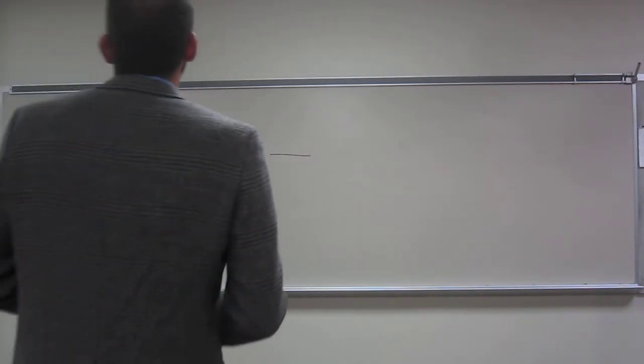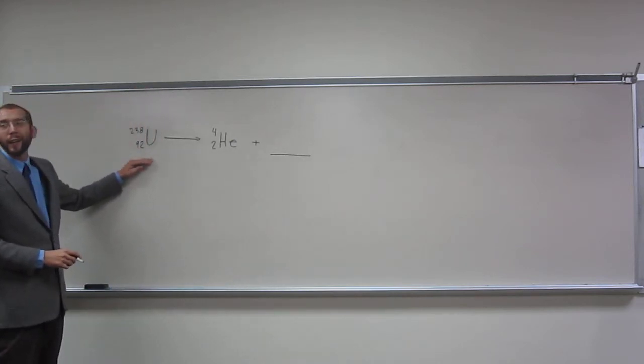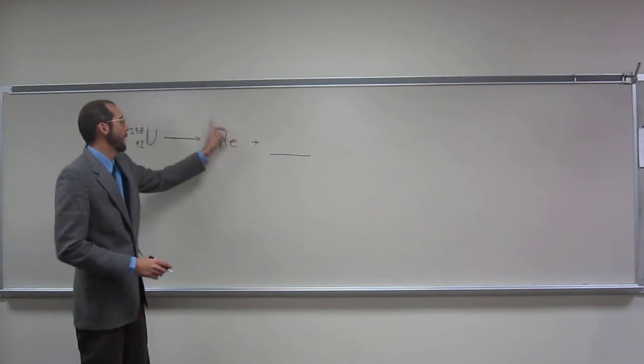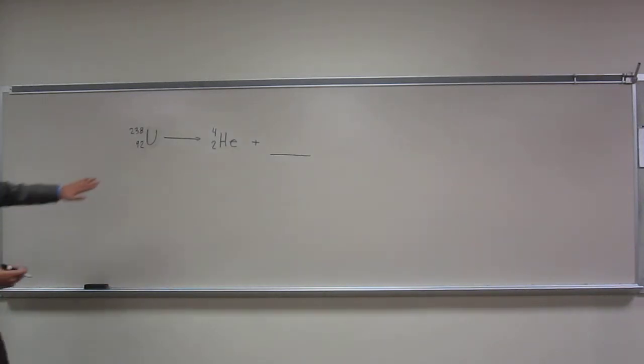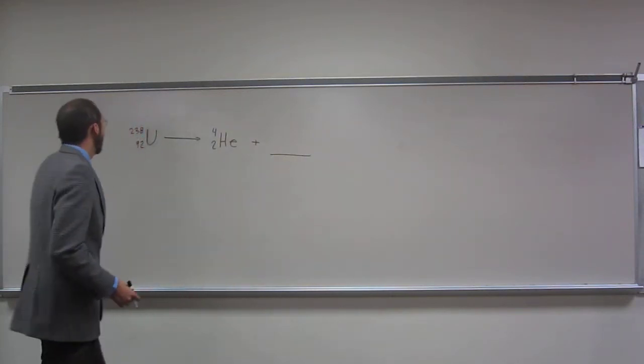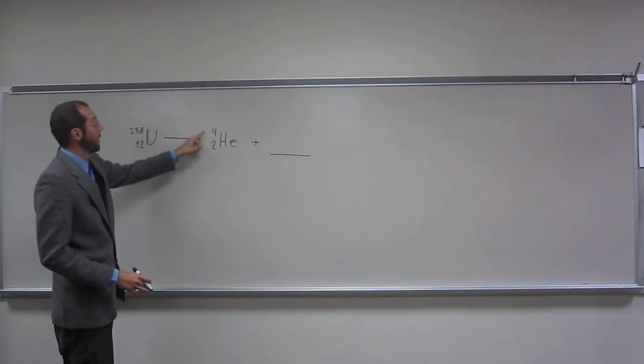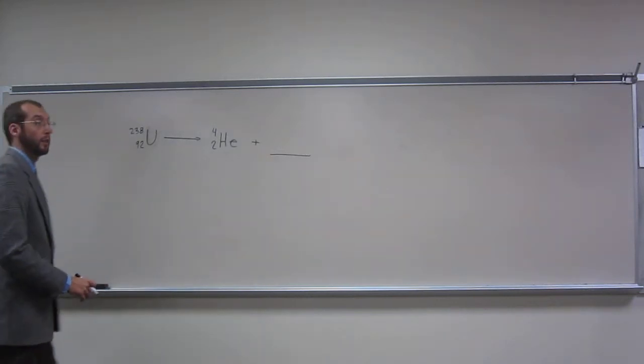So this is showing the chemical equation when a uranium-238 isotope releases what we call an alpha particle or a helium atom. So this is just like any other chemical equation. What's on this side has to equal what's on this side. And on the sides I'm talking about the number of particles here and here, subatomic particles, additively.